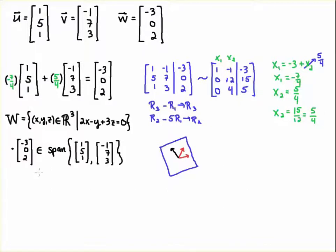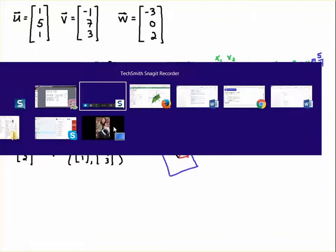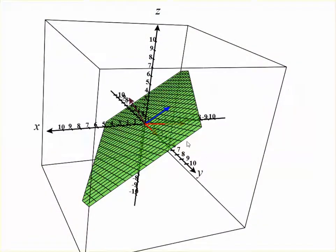And so that means that W is in the span of U and V. So let's tie this now to a subspace. If I think of these vectors as living in a subspace, let's say W of R3, it's all the set of points that satisfy this relationship: 2X minus Y plus 3 equals zero. Let me show you a picture of that. W is this green plane in R3.